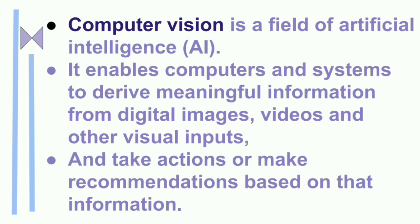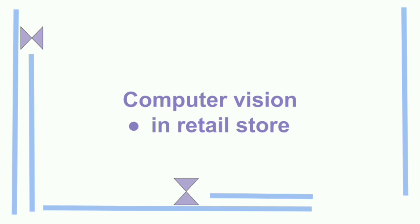Computer vision is a field of artificial intelligence. It enables computers to give output based on visual input. Visual input in the sense a camera will focus on image, video, anything. So based on that visual input, the computer will derive meaningful information for us, and will take a necessary action or make recommendations based on that information.